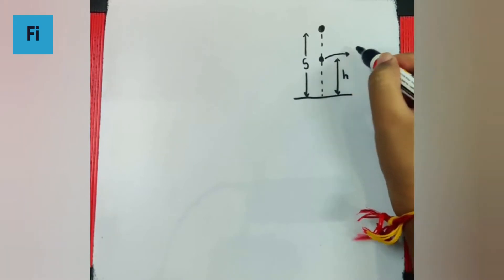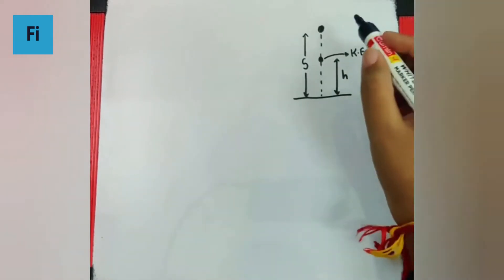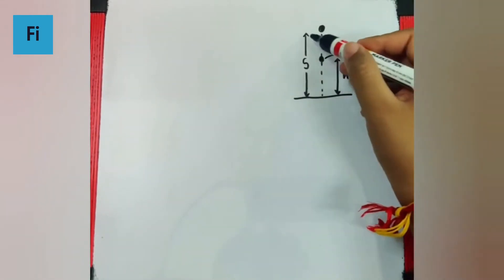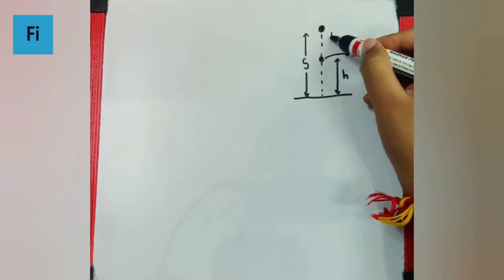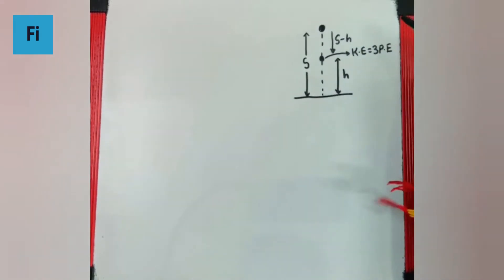This is the instant where the kinetic energy is three times the potential energy. Now I can say if this is s and this is h, obviously the distance covered in this time is s minus h.